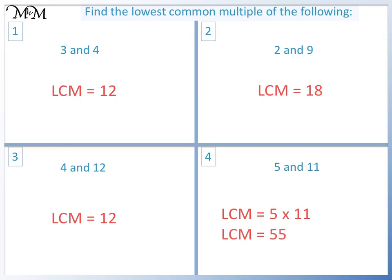This fact would also have worked for question 1, where 3 and 4 don't share any factors apart from 1. So we could have multiplied 3 by 4 to make 12. The same is true for question 2, where the only common factor is 1. So we could have multiplied 2 by 9 to make 18. This would not have worked for question 3, because they have shared factors, which are 1, 2 and 4.